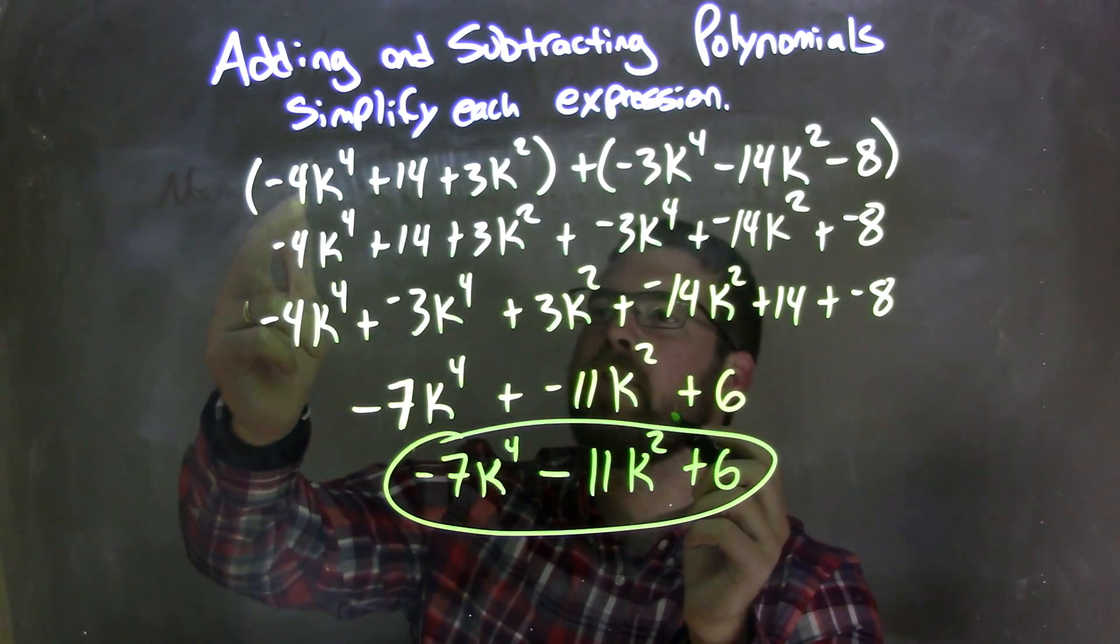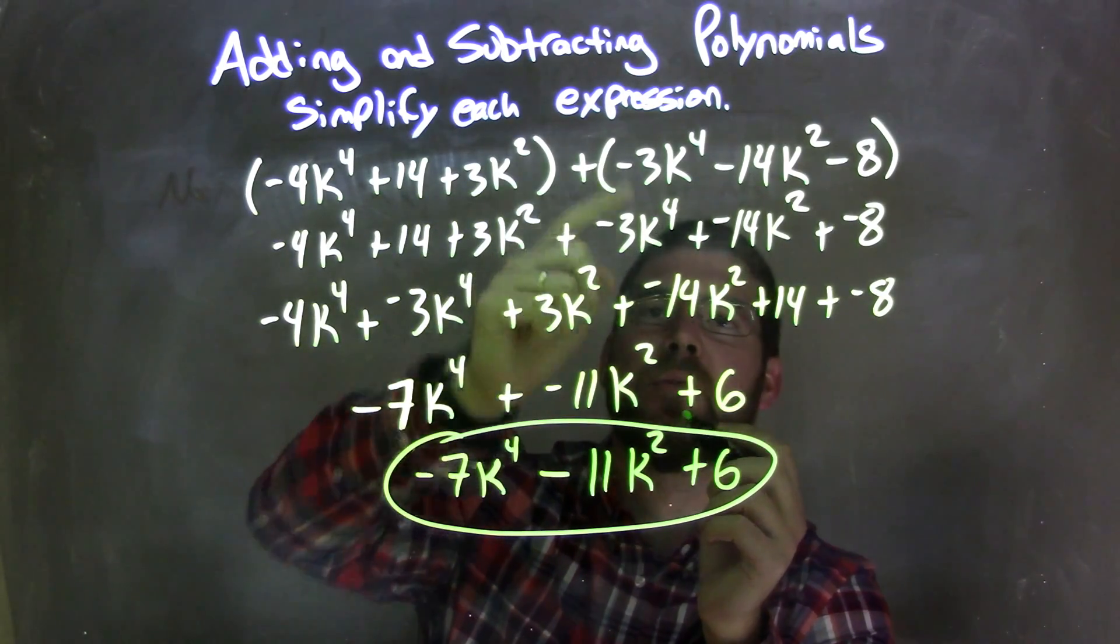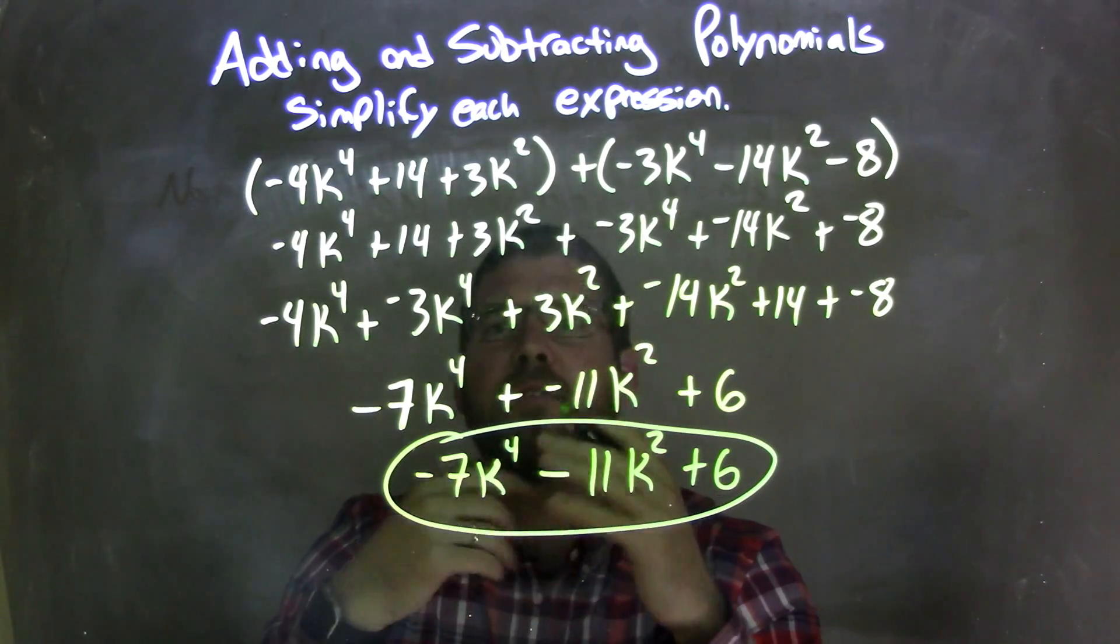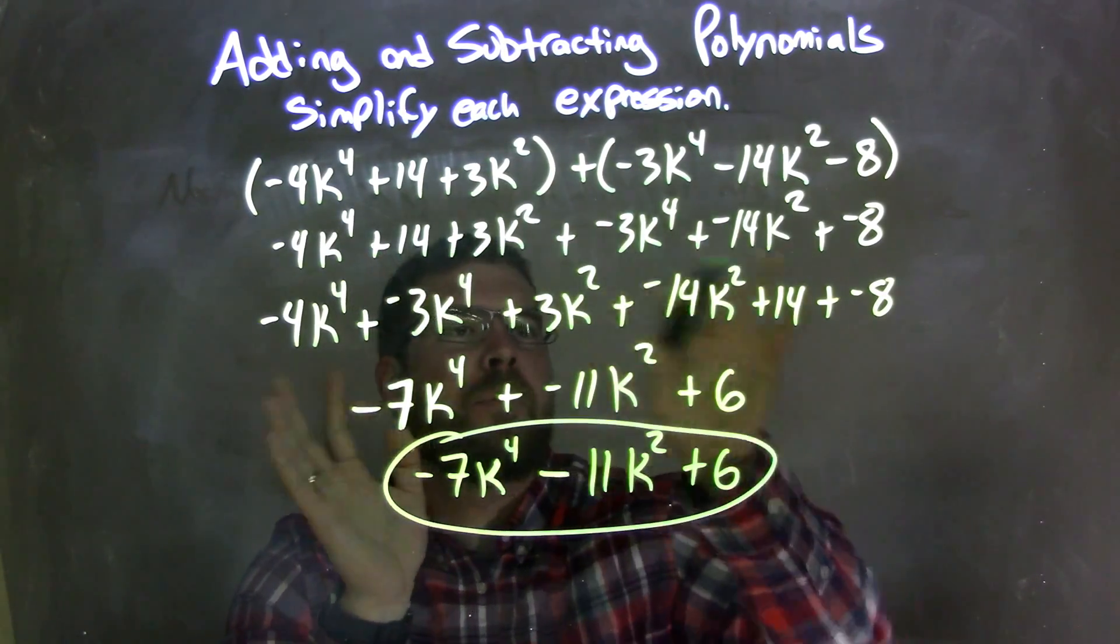So, let's recap. We're given parentheses: negative 4k to the 4th, plus 14, plus 3k squared, in parentheses plus, parentheses negative 3k to the 4th, minus 14k squared, minus 8. So, it was an addition between them. I eliminated the parentheses, but I made everything be plus and negative.